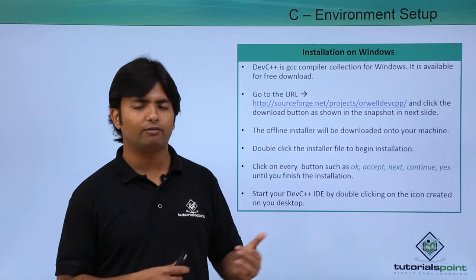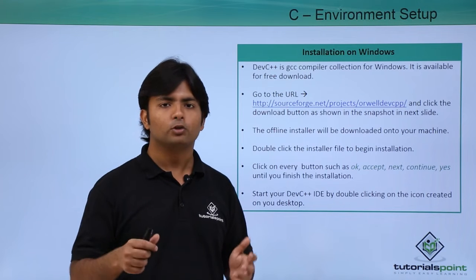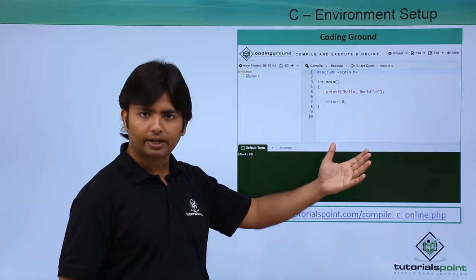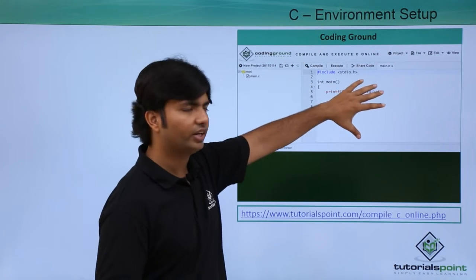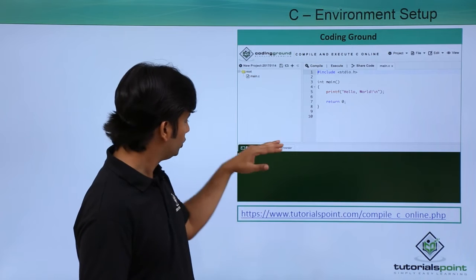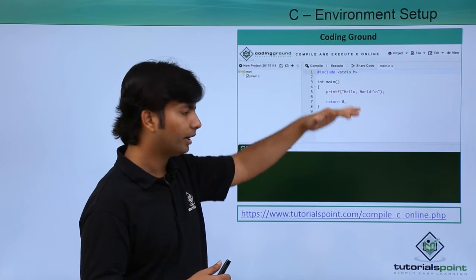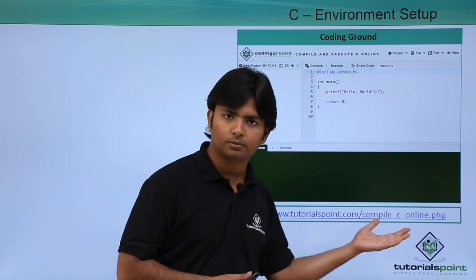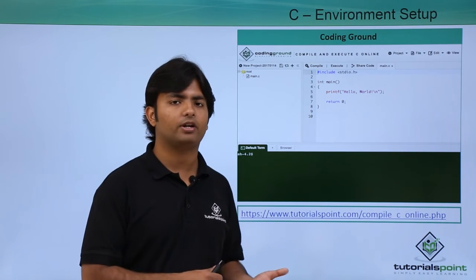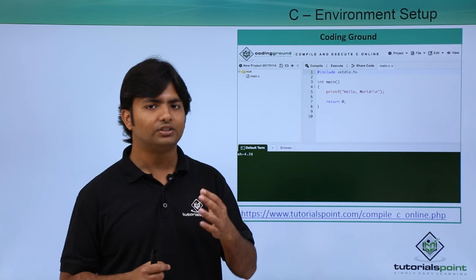If you don't want to install anything locally, regardless of your operating system, you can go directly to the TutorialsPoint website and use Coding Ground at the top. Choose the C environment and you'll find a text editor. Write your code, click Compile to see any errors, and click Execute to run it — the output will appear in the terminal. In our next video we will start writing the first program in C language.